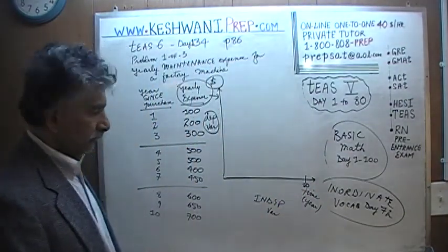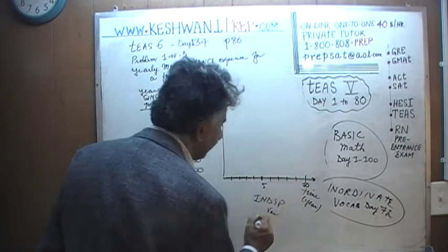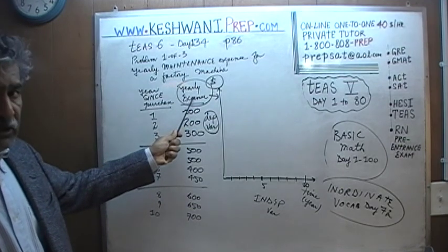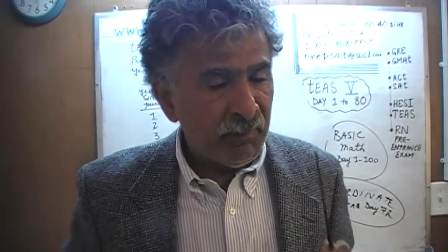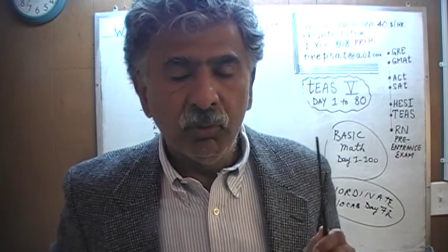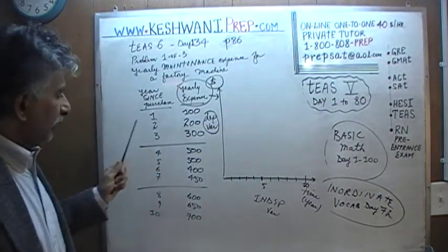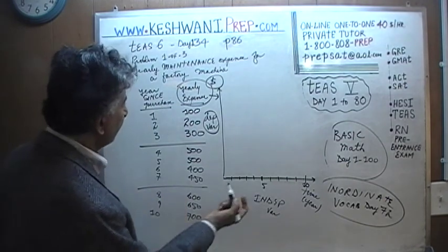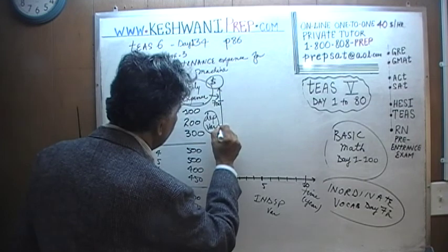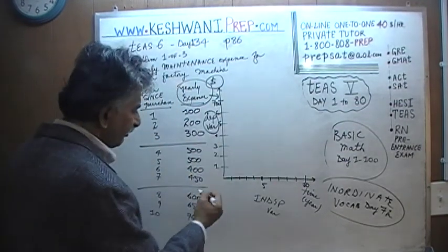We have ten years — put ten here; halfway through will be five. We divide into one, two, three, four, five, six, seven, eight, nine, and ten. On the y-axis we're showing the yearly expense — not the total cumulative expenses over all the years. The highest value is $700, so we mark that, and divide the y-axis into increments: $100, $200, $300, $400, $500, $600, and $700. These are expressed in hundreds.